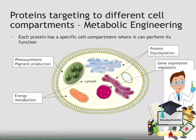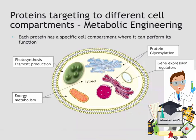Now you've designed your gene, but there's one additional part. If you're doing metabolic engineering — changing the metabolism — you need to understand that each reaction happens in a specific part of the cell. For example, if you want to make cells more efficient at photosynthesis, you'll target the photosynthesis pathway in the chloroplast. If you want to change the Krebs cycle, your proteins need to be in the cytosol. If you want to change gene expression, you need to target proteins to the nucleus, and so on.